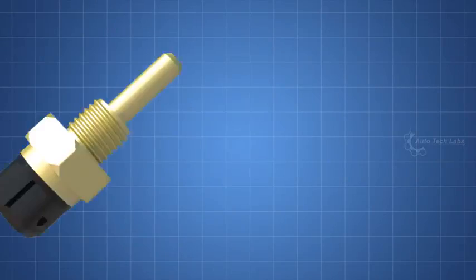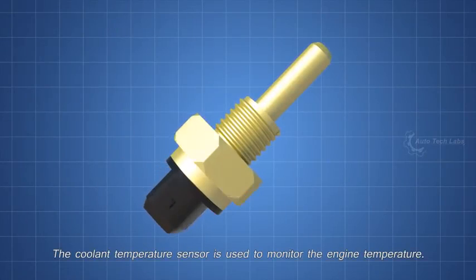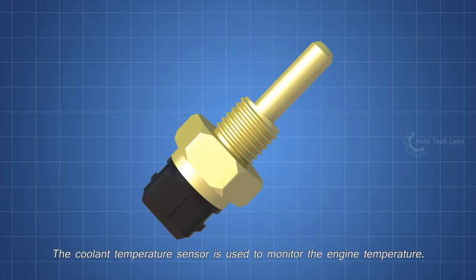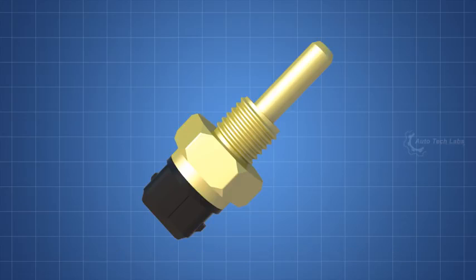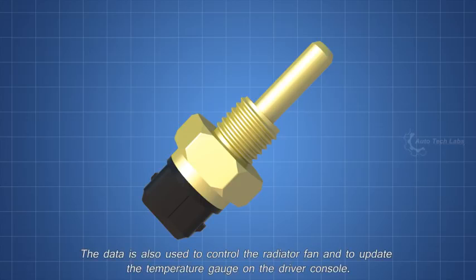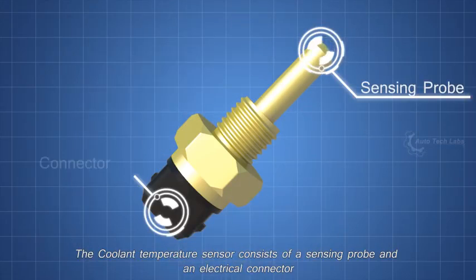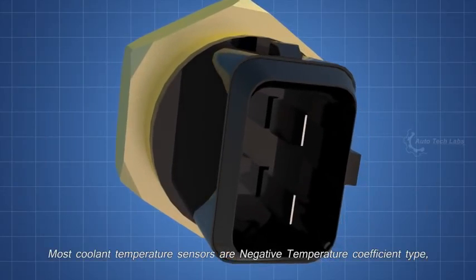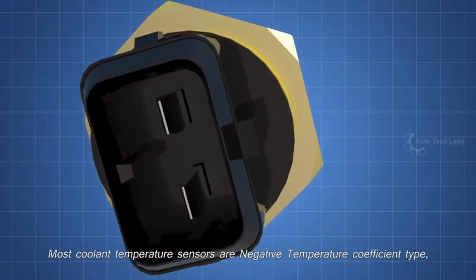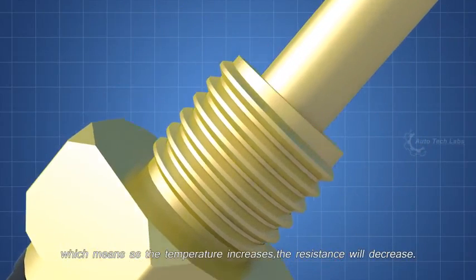Next, the coolant temperature sensor. The coolant temperature sensor is used to monitor the engine temperature. The ECU will use this data to manage fuel injection and ignition time. Some engines have more than one coolant temperature sensor. The data is also used to control the radiator fan and to update the temperature gauge on the driver console. The coolant temperature sensor consists of a sensing probe and an electrical connector. Most coolant temperature sensors are negative temperature coefficient type, which means as the temperature increases, the resistance will decrease.